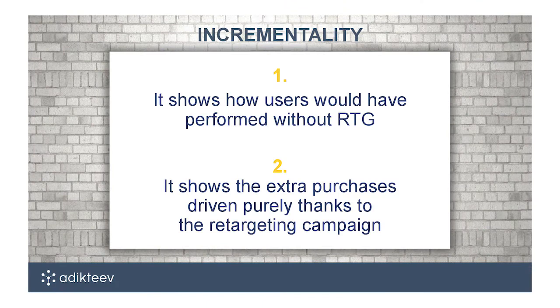The trick is to count only the purchases that were driven from the retargeting campaign — not the whole revenue. And the way to do this is incrementality. Incrementality shows you how users would have performed without the retargeting campaign while running a retargeting campaign — basically the difference between your retargeting campaign and your existing users by themselves. It shows the extra revenue driven thanks to the retargeting campaign.